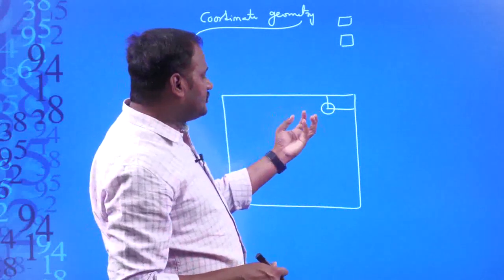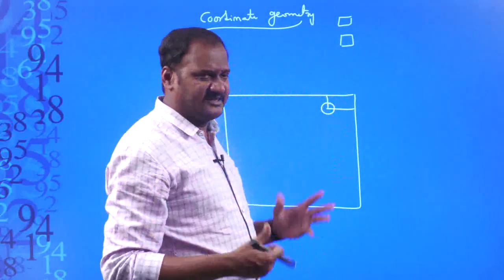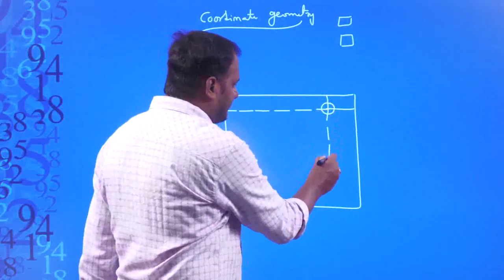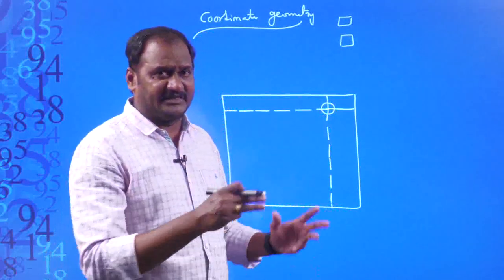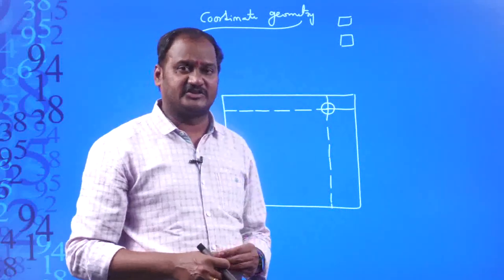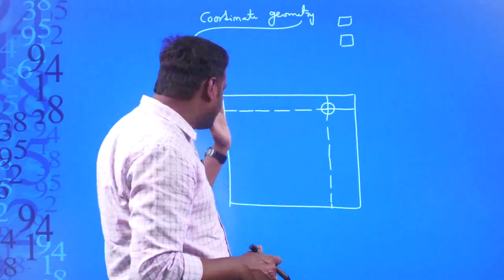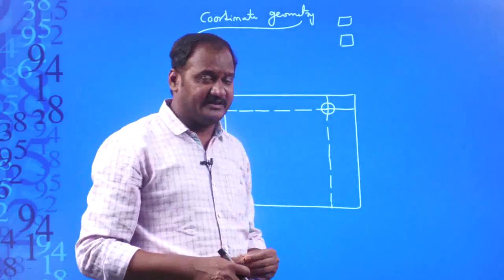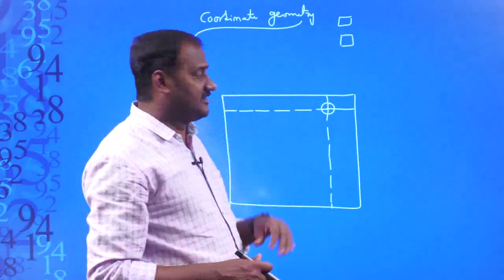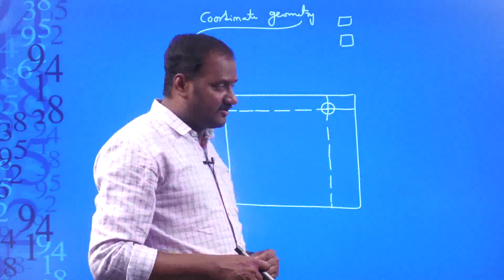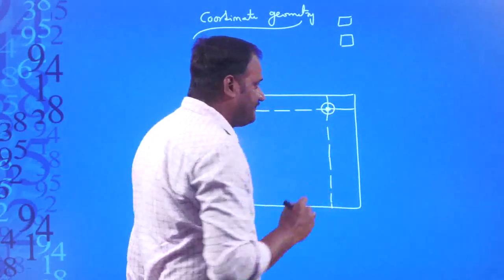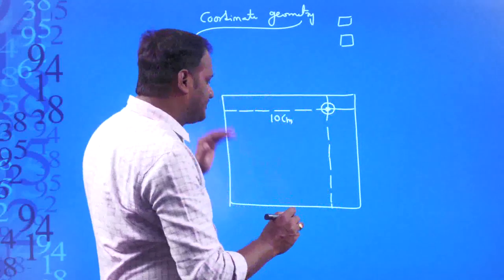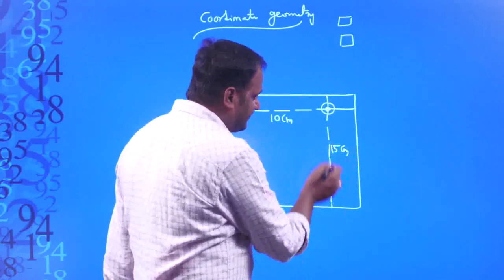According to the distances from the top edge as well as the right edge — or you can say the distance from the left edge and the distance from the downward edge — you are locating this particular table lamp using both edges. This is the distance from the left edge and this is the distance from the top or bottom edge. So definitely you are referring to two distances: one is a horizontal distance and one is a vertical distance. The table lamp is exactly at some 10 centimeters distance from the left edge and some 15 centimeters distance from the bottom edge.